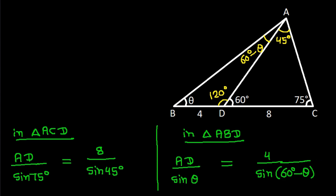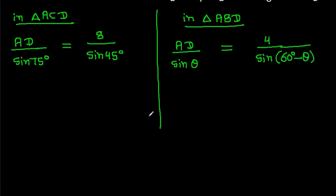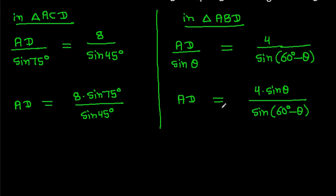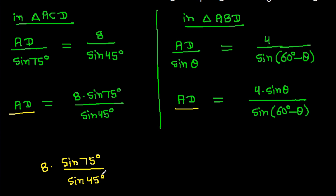From the first triangle, we can get AD equals 8 times sin 75 degrees over sin 45 degrees. And from the second triangle, we can get AD equals 4 times sin theta over sin(60 degrees minus theta). So from these two equations, we can get 8 times sin 75 degrees over sin 45 degrees equals 4 times sin theta over sin(60 degrees minus theta).